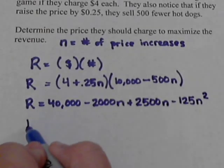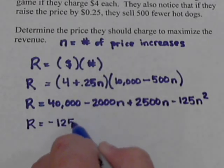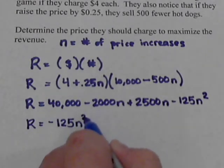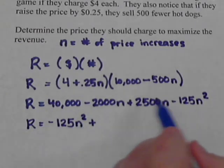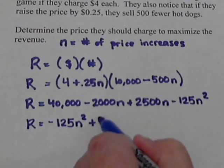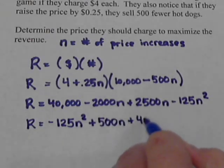So, now let's rearrange this in our more familiar order. Let's put the n squared first. Negative 125n squared. Plus negative 2,000 plus 2,500, that's going to be 500n plus our 40,000.